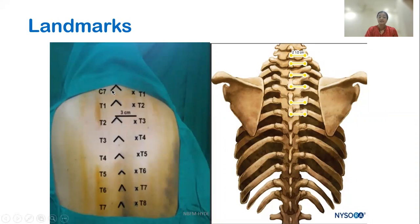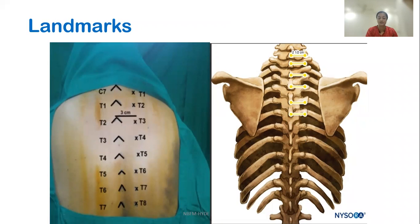The exact point to hit the transverse process is around three centimeters from the superior aspect of the spinous process on the ipsilateral side. You can see that this is the spinous process and this is the transverse process — you enter perpendicular to the skin at all levels to hit the transverse process.